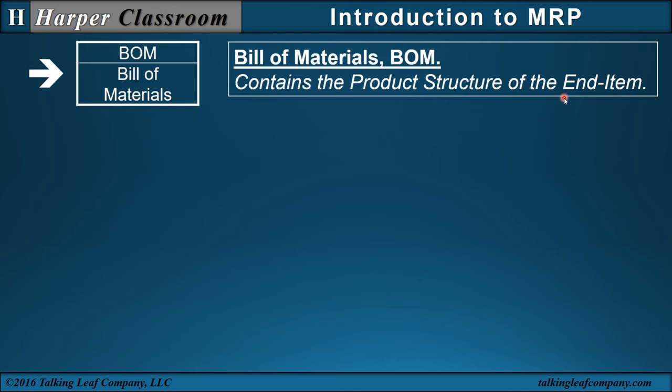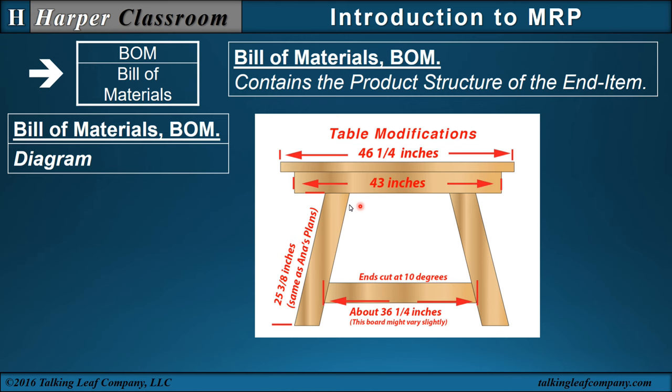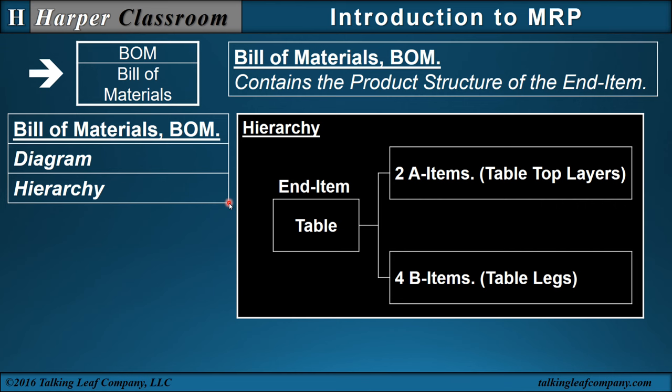Next, the bill of materials. The bill of materials contains the product structure of the end item. For example, our end item might be a table. Our bill of materials could be as simple as a diagram — for very simple end items, a diagram would be sufficient. For more complex end items, we have hierarchy. Here the hierarchy shows our end item, the table, which requires two A items — table top layers — that go into the table.